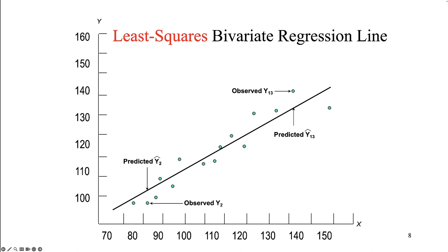How does regression determine the correct slope of the line? The line of best fit minimizes the distance from each actual y value for each dot to the predicted observation — y-hat, or the line on the graph. Since some predicted distances are technically negative, we square the distances to make them all positive. We then seek the line that minimizes the overall squared distances from all observations. Thus, we have a least squares regression line.